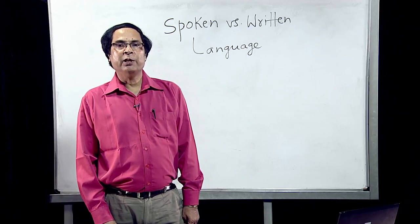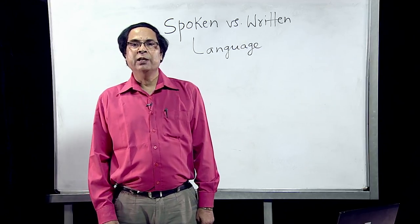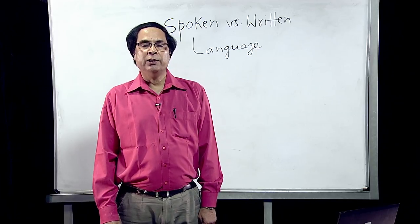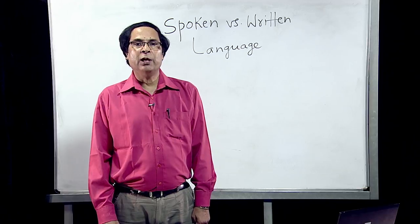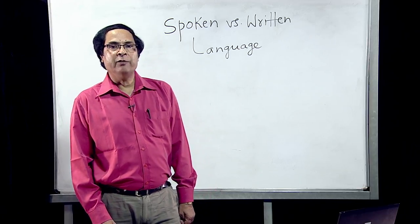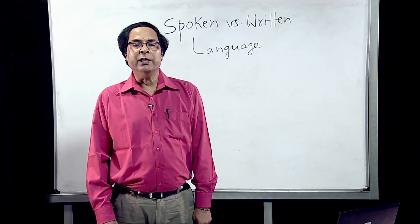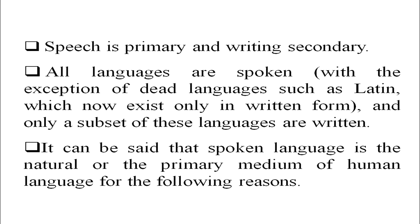Some languages still remain unwritten — for example, some tribal and minor languages spoken by fewer than 400, 500, or 1,000 speakers, such as Tarao in Manipur and Dimal in West Bengal. They do not have a script to write. We also know that speech is primary and writing is secondary.